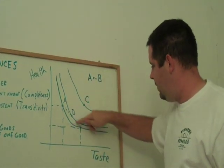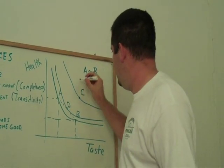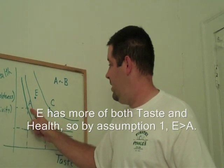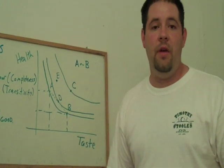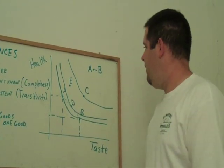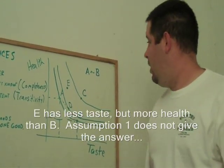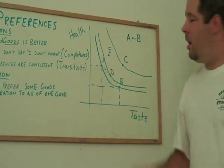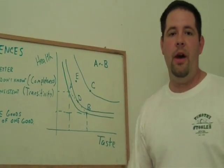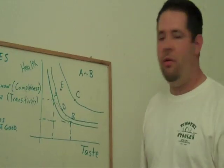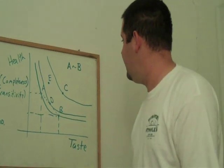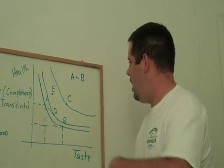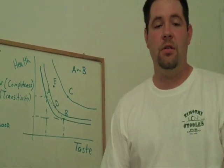If I draw an indifference curve through A and B and ask whether bundle E is better or worse than A, I now have an answer: E is above and to the right of the indifference curve, so E is preferred to A. And since I'm indifferent between A and B, E is also preferred to B — it's higher up on the mountain. By drawing these indifference curves, we can order all different bundles on the map, and that's really how we want to think about preferences and interpret indifference curves.